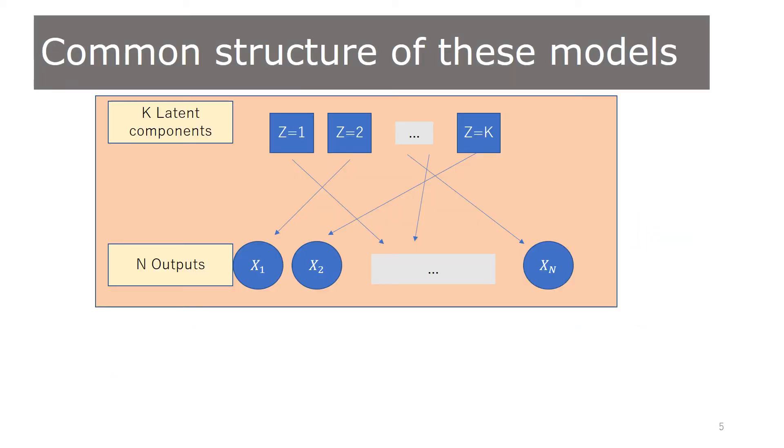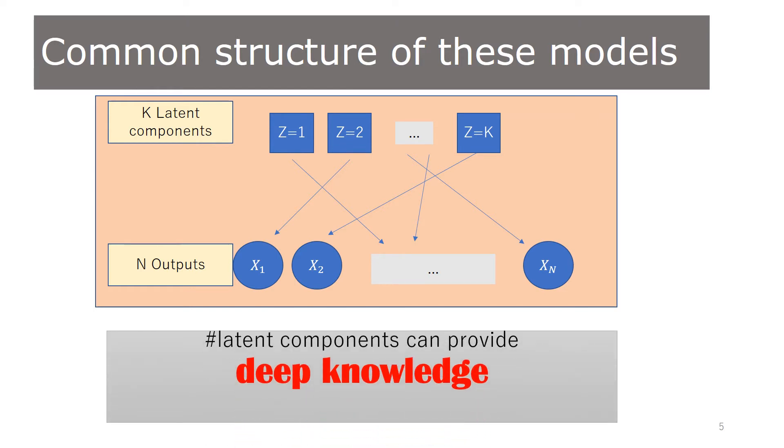These latent variable models share a common hierarchical structure, where latent variables follow multinomial distribution. The number of latent components provides deep knowledge, which we wish to estimate from the data.